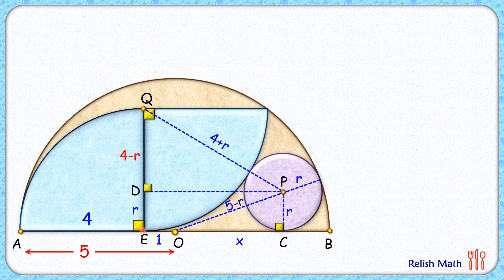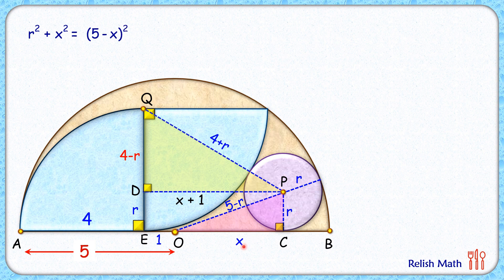If we assume OC has length x centimeters, then EO equals 1 centimeter, and length DP equals EC, which is x plus 1. Now we have two right-angle triangles. Their side lengths are in two variables, r and x, so we'll form equations using the Pythagorean theorem and solve to get the value of r.